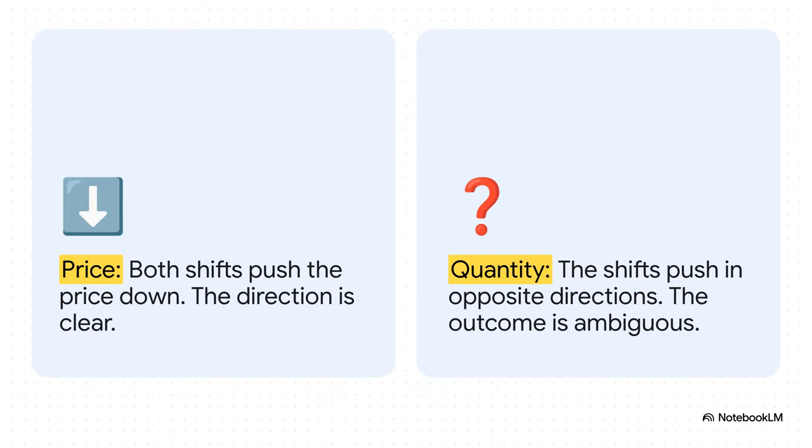So let's just spell this out so it's crystal clear. When it comes to price, both forces are singing the same tune. They're both pushing it lower so there's no mystery. But for quantity, the forces are in that tug of war we talked about. One pulls it down, the other pulls it up. The final result is totally ambiguous.